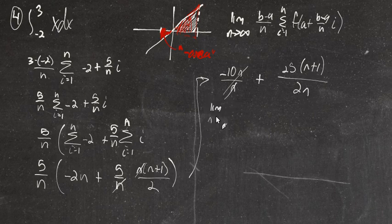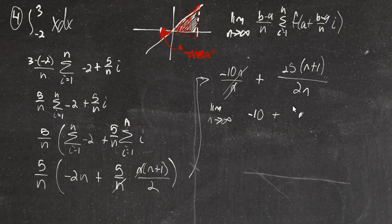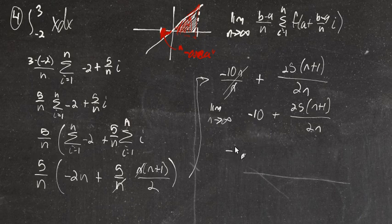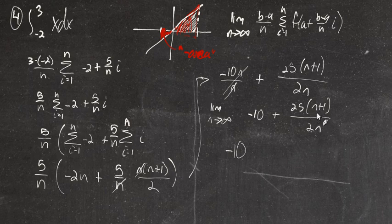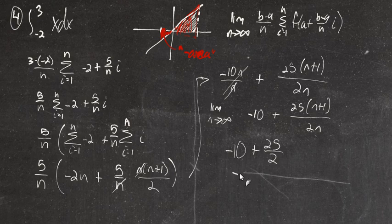Now we want to let n go to infinity of negative 10 plus 25 times (n+1)/(2n). The negative 10 is unaffected as n goes to infinity. For the rational expression (n+1)/(2n), we look at the degree of numerator and denominator — both degree 1 — so we get the ratio of leading coefficients: 25 times 1/2, which is 25 halves. We get negative 20 halves plus 25 halves, which gives us 5 halves.